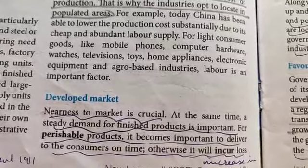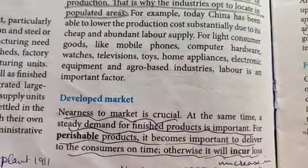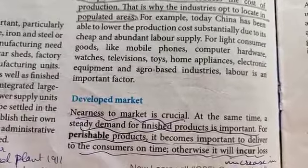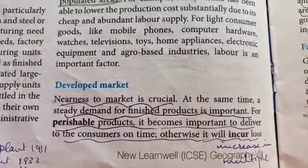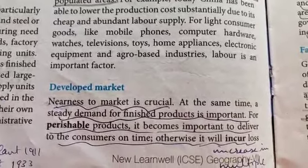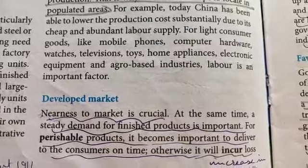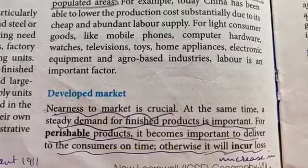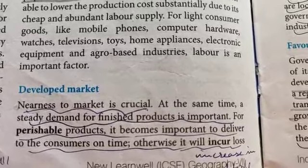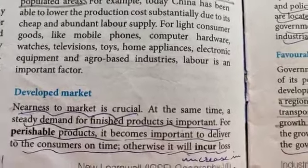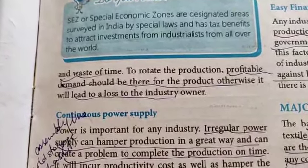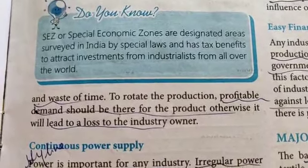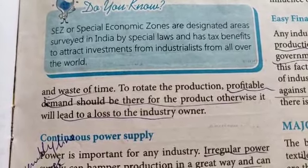They have given the example of perishable goods, which also come under FMCG — Fast Moving Consumer Goods. All perishable products, even toothpaste, have to be consumed or used within a limited period of time. A steady demand for finished products is important; for perishable products it becomes important to deliver to consumers on time, otherwise it will incur a huge loss. A profitable demand should be there for the product, otherwise it will lead to a loss for the industry owner.